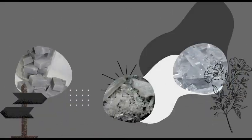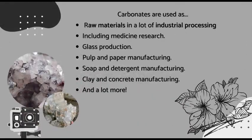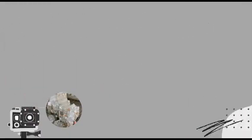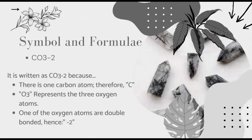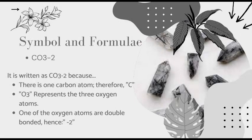The uses of the compound: what are carbonates used for? Carbonates are commonly used as raw materials in a lot of industrial processing, including medicine research, glass production, pulp and paper manufacturing, soap and detergent manufacturing, clay and concrete manufacturing, and so much more. The symbol for carbonates is CO3²⁻. It is written as CO3²⁻ because there is one carbon atom, therefore C. O3 represents the fact that there are three oxygen atoms. And one of the oxygen atoms is double bonded, hence the 2.